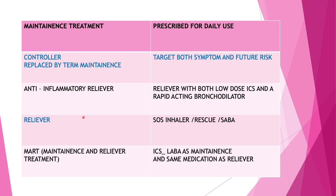The term 'controller' is being replaced with the term 'maintenance,' meaning it targets both symptoms and future risk. What is AIR—the anti-inflammatory reliever? It is a reliever with both a low-dose inhaled steroid and a rapid-acting bronchodilator, similar to ICS and SABA. A reliever is your SOS inhaler—the rescue inhaler or SABA. MART means maintenance and reliever treatment: ICS-LABA used as both maintenance and reliever. So the current 2023 terminology is: maintenance, reliever, anti-inflammatory reliever, and MART.